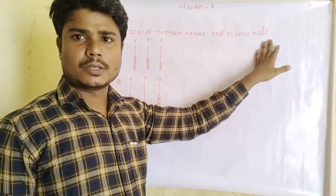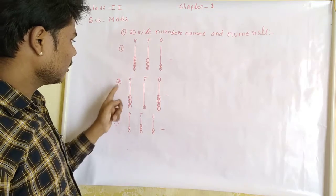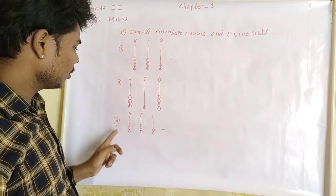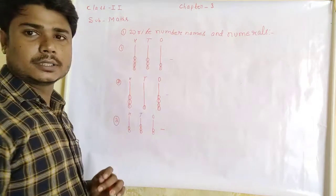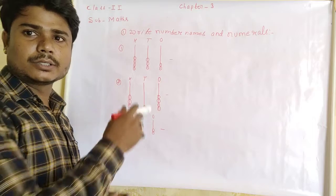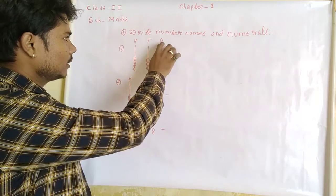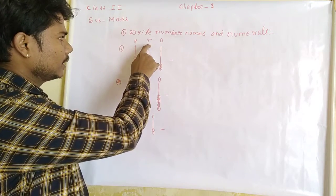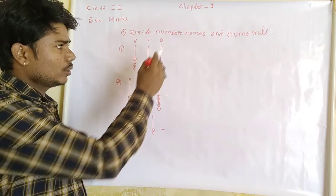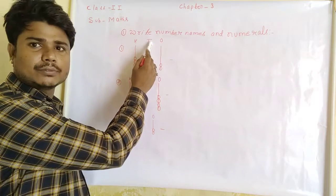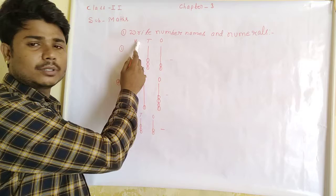See the question: write number name and numerals — question number one, question number two, question number three. This is called an abacus. This is ones, this is tens, this is hundreds. O stands for ones, T stands for tens, H stands for hundreds.